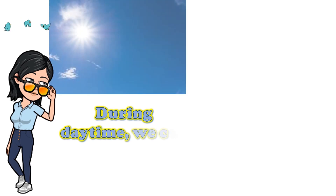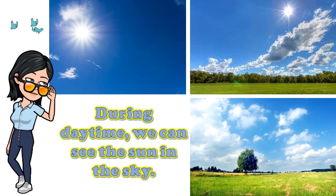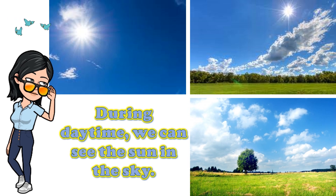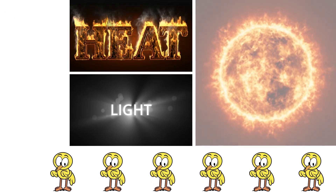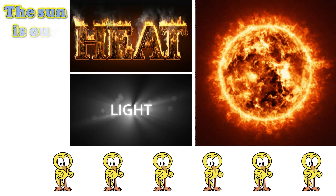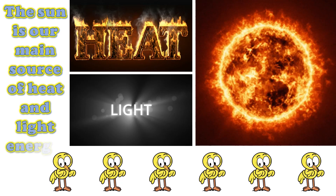During daytime, we can see the sun in the sky. It is the brightest and largest object in the sky. It gives out heat and light. The sun is our main source of heat and light energy.